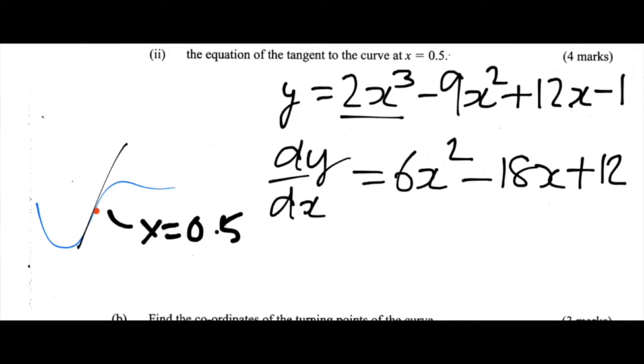That's going to be the third and last term, because we lose this minus 1 term. So we've got dy by dx, that's 6x squared minus 18x plus 12.